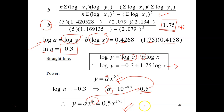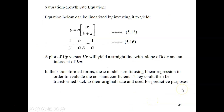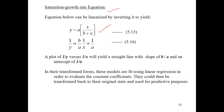So y equals a times x to the b, where a is 0.5 and b is 1.75. There you go — you've got your power equation fitted to the data in the table. Next, we're going to talk about the saturation growth rate equation, which is very famous in chemical engineering, bioprocess engineering, and biochemical engineering.